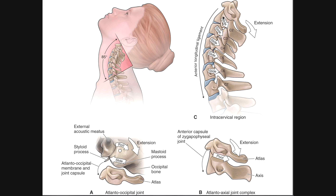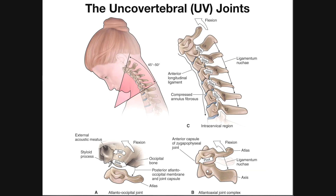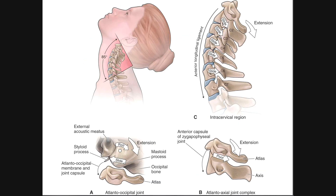This pattern continues throughout the cervical spine, with the exception of the C1-C2 joint. A couple of other things happen that are opposite to what we see during flexion.